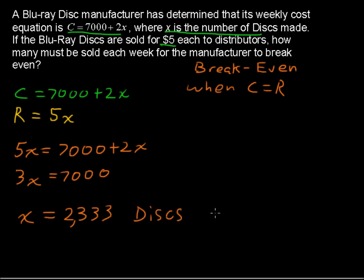And to be specific, the discs have to be made and sold in that week. If they made more than that, of course, they would cost more. So they're limiting at 2,333 discs per week made and sold to break even.